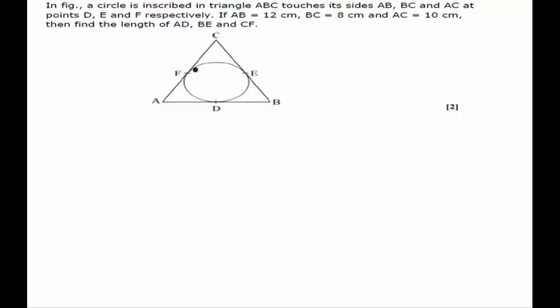AB, BC, and AC at D, E, and F points respectively. AB is given to be equal to 12 centimeters, BC is given equal to 8 centimeters, and AC is given equal to 10 centimeters.